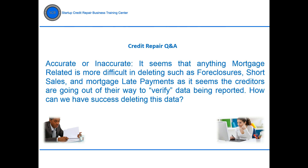It seems that anything mortgage-related — foreclosures, short sales, and mortgage late payments — is more difficult to delete because creditors go out of their way to verify data. How can we have success deleting this data? In the software's letter campaigns there is a mortgage late payment campaign and a foreclosure/short sale campaign. Use those letters to tackle foreclosures, short sales, and multiple lates on a mortgage. It all goes back to finding information that is not reporting 100% accurately.